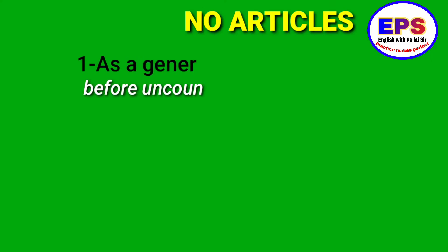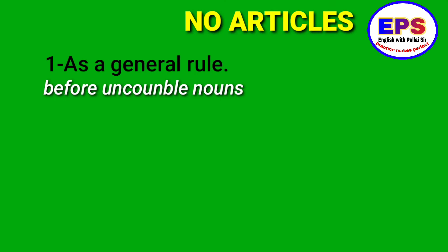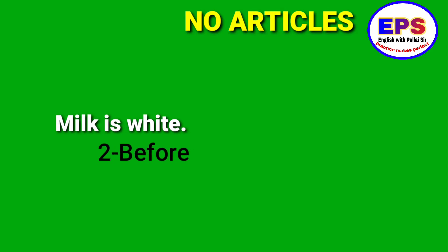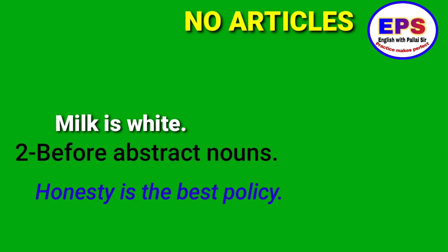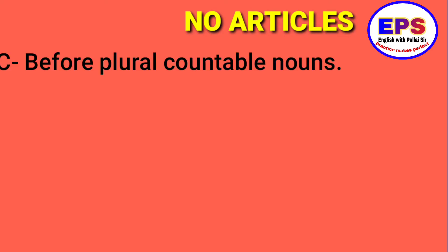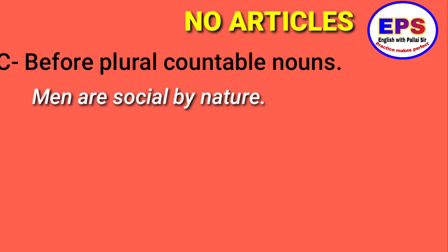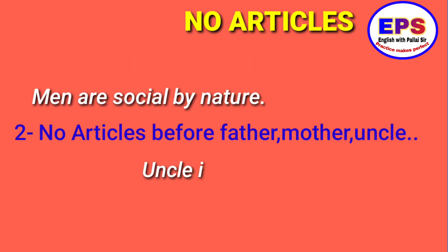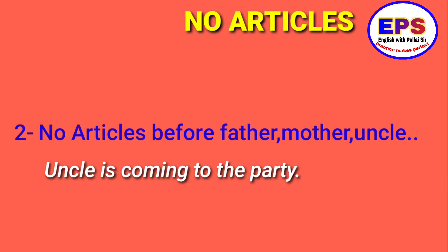A general rule: you do not use articles before uncountable nouns — for example, 'Milk is white.' Before uncountable abstract nouns — for example, 'Honesty is the best policy.' Before plural nouns — for example, 'Men are social by nature.' Also, no article before family relations used as names — like 'Uncle is coming to the party.'